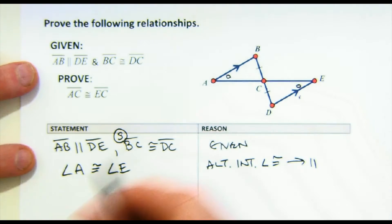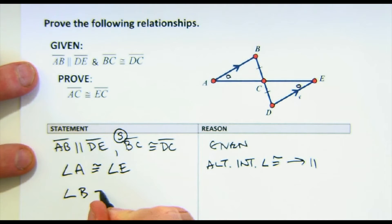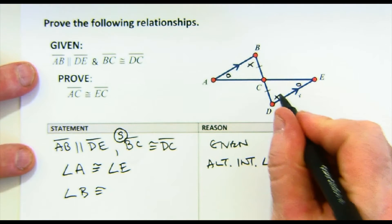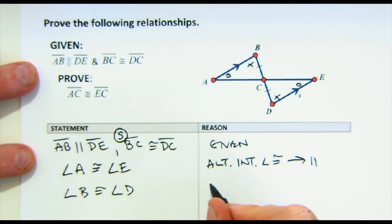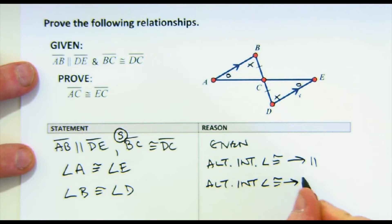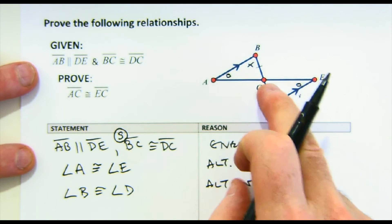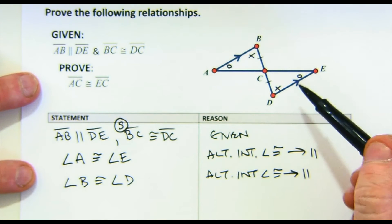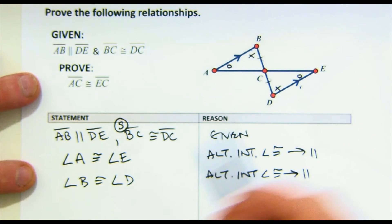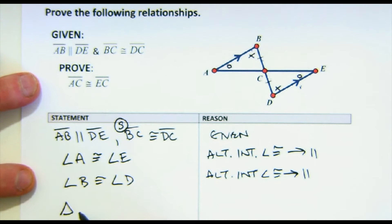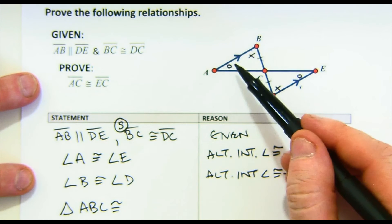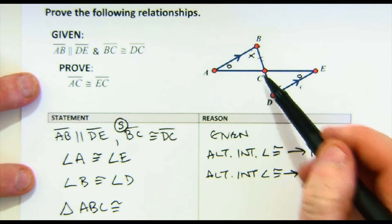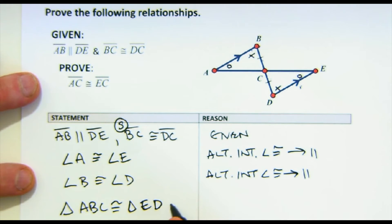I'm going to use that again: angle B is congruent to angle D, same reason — alternate interior angles are congruent with parallel lines. You could also list the vertical angle; with most configurations there are multiple ways to do it. I notice I have angle, angle, side — so I am good enough to say triangle ABC is congruent to triangle EDC by AAS.